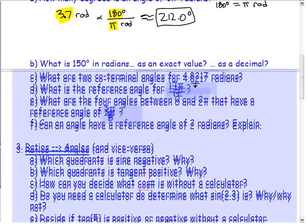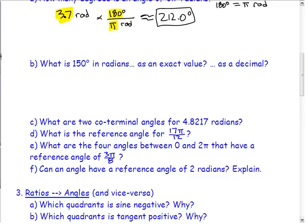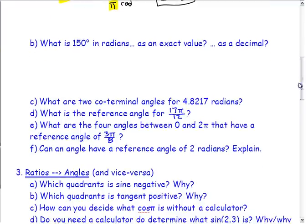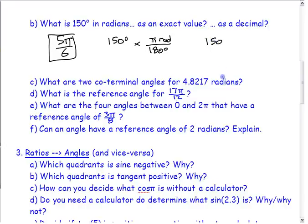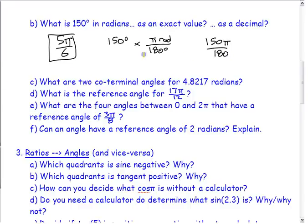Now convert 150 degrees to radians — this is one you should recognize as an exact value. If you recognize it's 5π/6, great. If not, use the conversion: multiply by π/180. So 150 degrees is 150π/180. Reducing that fraction, 150 over 180 simplifies to 5/6, giving 5π/6.